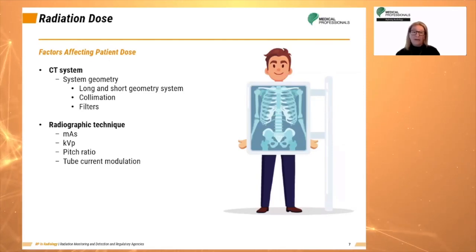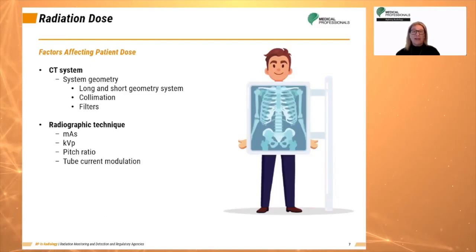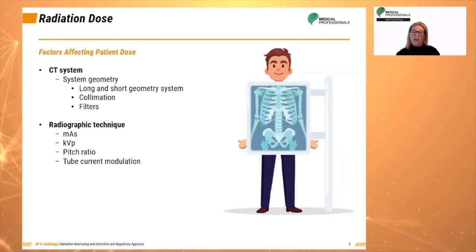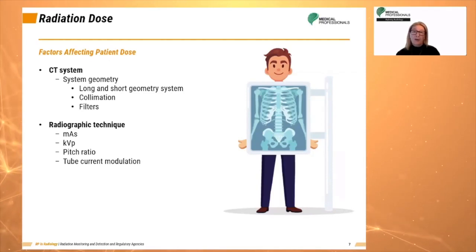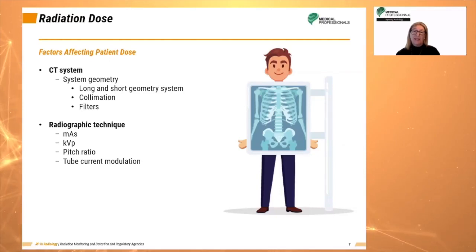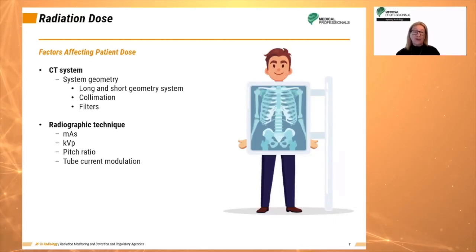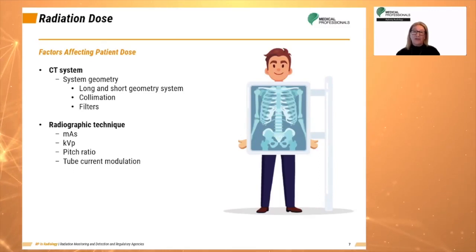The kVp value is the qualitative measure of the x-ray beam. An increase in kVp produces an increase in photon energy. Typically 120 kVp is used in CT. It is important to note that increasing kVp by 15% and reducing MAS by half will reduce the patient dose but will also increase image noise.